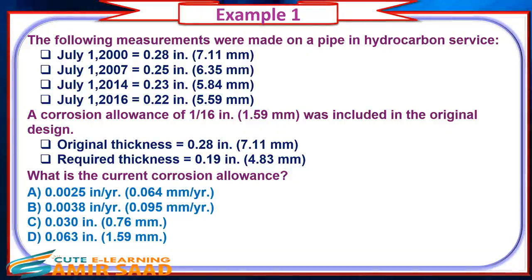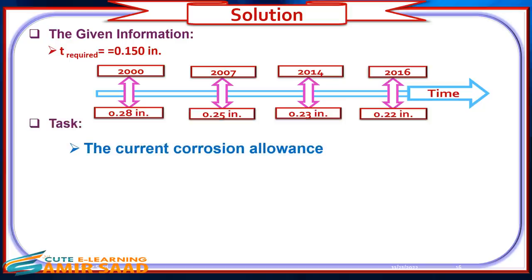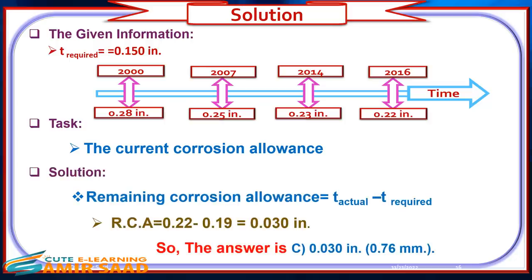Example 1: The following measurements were made on a pipe in hydrocarbon service. A corrosion allowance of 1/16th inch was included in the original design. What is the current corrosion allowance? Solution: Remaining corrosion allowance equals T-actual minus T-required. The answer is C: 0.030 inch.